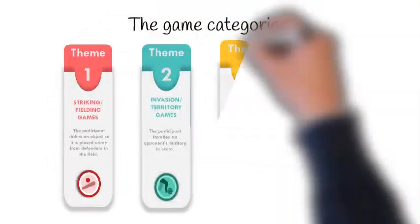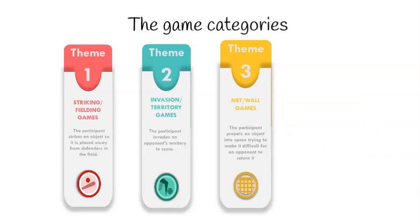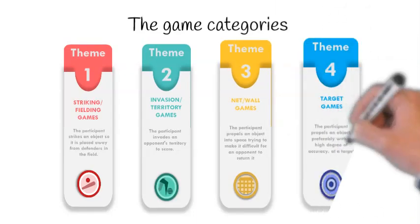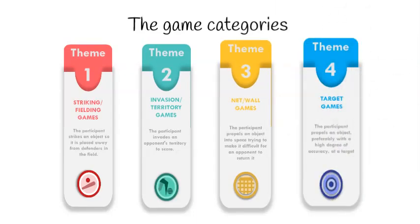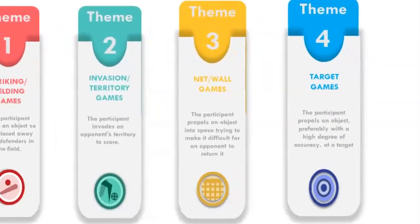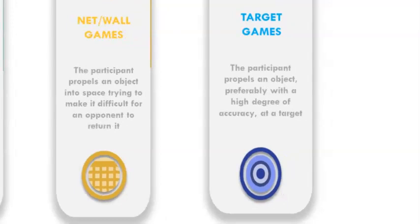The final aspect of the model is the four game categories or themes. The first is target games: game forms in which players send an object, such as a ball or a dart, towards a target area. Sometimes this may also involve avoiding obstacles.